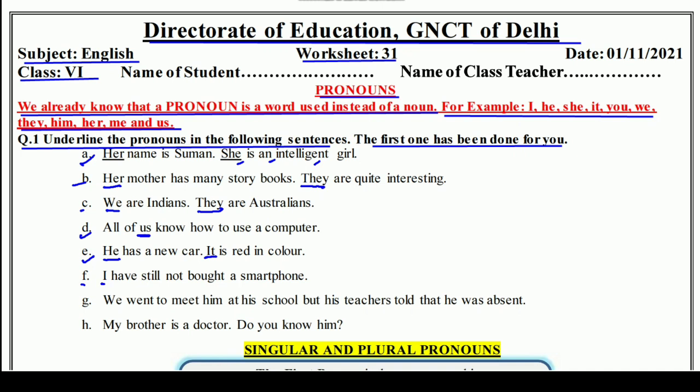F: I have still not bought a smartphone — मैंने अभी तक smartphone नहीं खरीदा। 'I' is a pronoun. G: We went to meet him at his school, but his teachers told that he was absent — हम उससे मिलने उसके school गए, लेकिन उसके teachers ने कहा कि वह absent है। H: My brother is a doctor — do you know him? तो ये सारे words noun की जगह use होते हैं, और इन्हें हम pronouns कहते हैं।